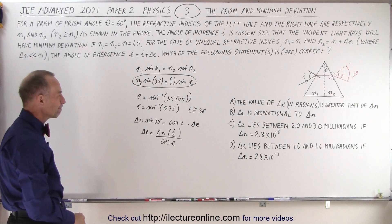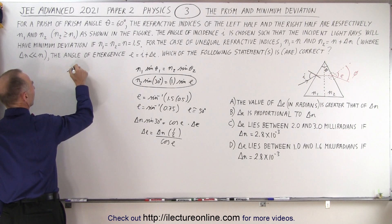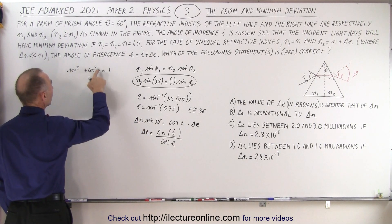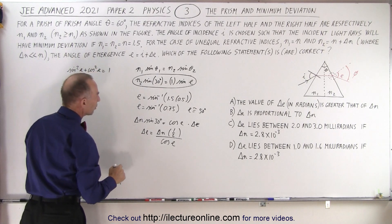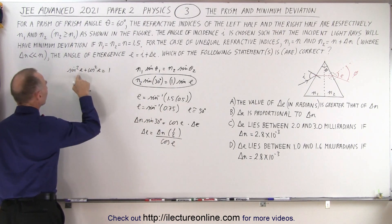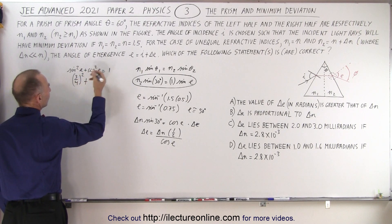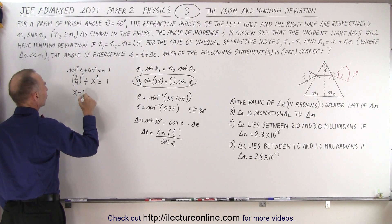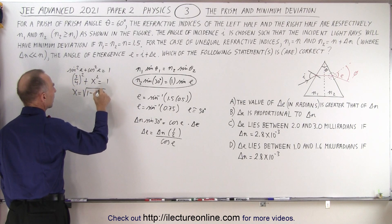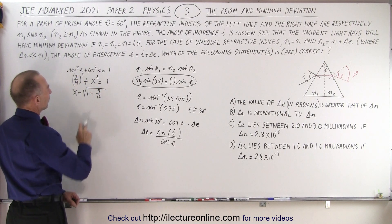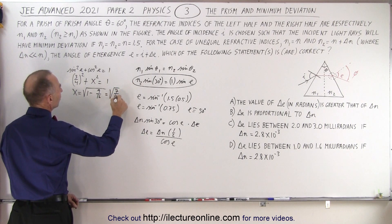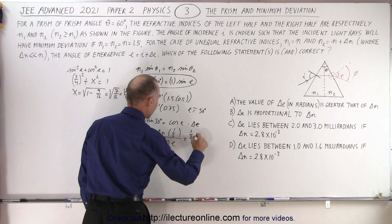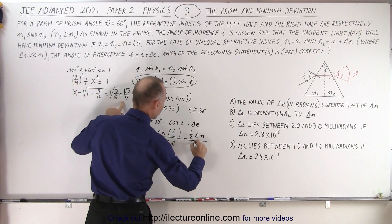So how do I find the cosine of e? Well, we can use sine squared theta plus cosine squared theta equals one. In this case we replace theta by the angle e. We already know that e is the inverse sine of 0.75, which is three-quarters. So that means three-quarters squared plus x squared equals one. I can now solve for the cosine of e: x is equal to the square root of one minus 9 over 16, which is the square root of 7 over 16, which is equal to the square root of 7 over 4. So now I can go ahead and plug that in.